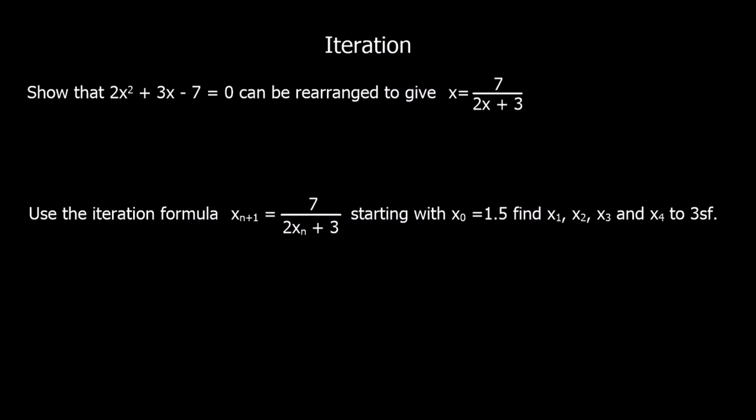So we're going to solve the equation 2x squared plus 3x minus 7 equals 0. And to set up an iteration formula, we're going to rearrange that into the form so it is x equals. So in this case, we're going to go to x equals 7 over 2x plus 3.